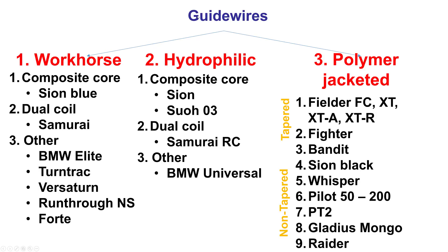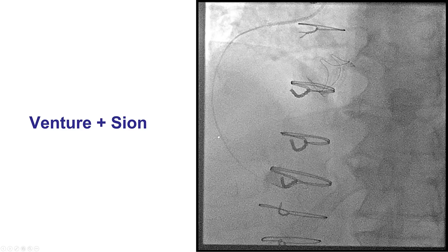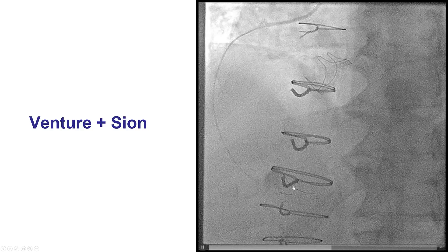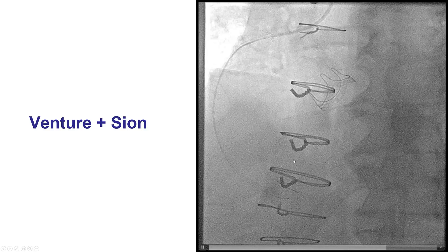Another trick for wiring through tortuosity is using a slippery wire. Instead of a workhorse, one can use a hydrophilic coating wire, or even more aggressively, a polymer-jacketed wire. In this case, we used a Sion composite core wire with hydrophilic coating all the way to the tip, in contrast to the Sion Blue which lacks hydrophilic coating at the distal tip. With the Venture catheter close to the tip providing strong support, the Sion wire was advanced further.